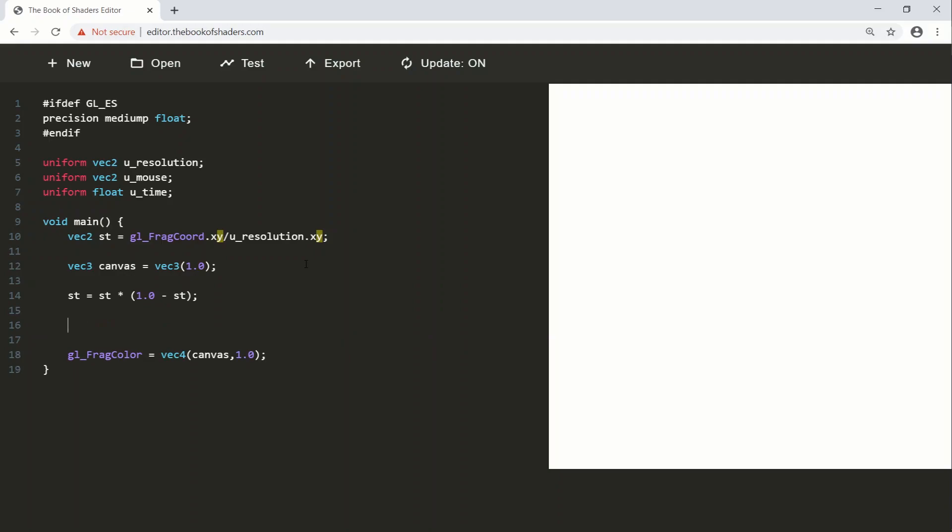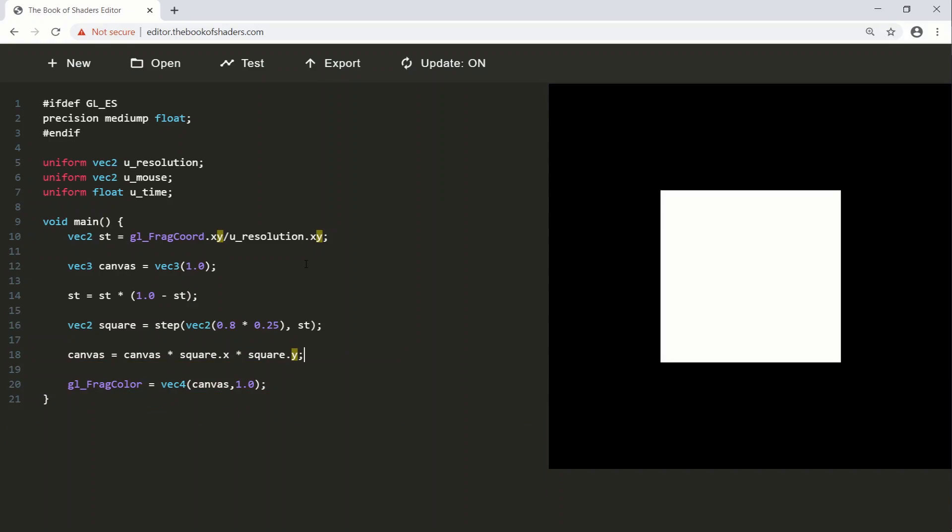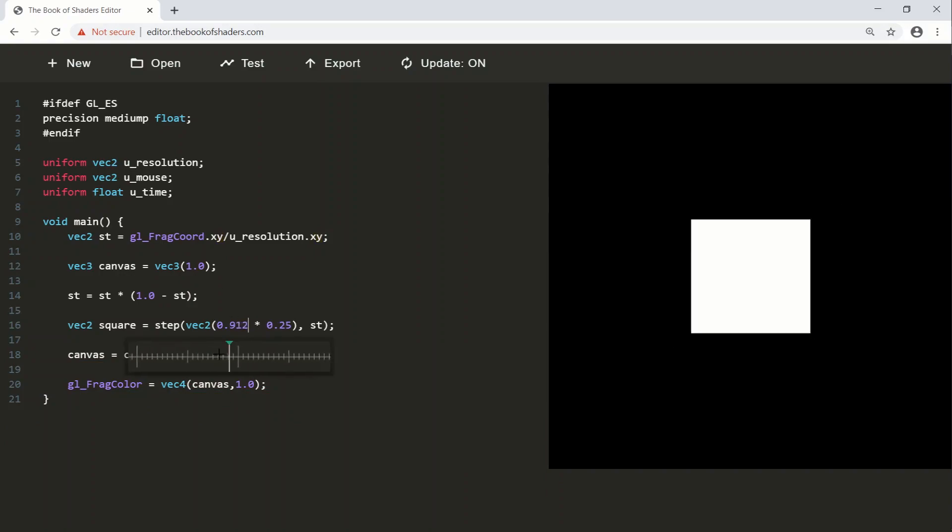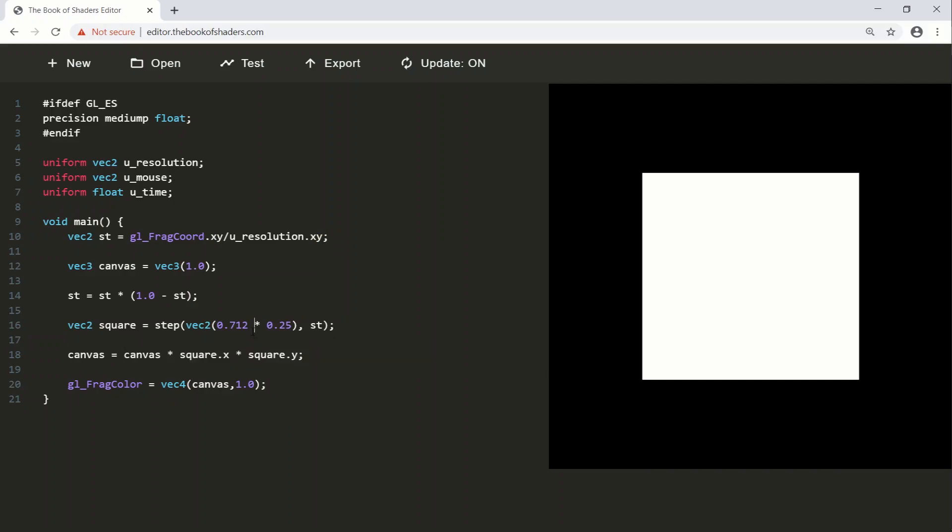I'll apply a step function there. So we're going to say VEC2 of the square is equal to step, and we'll say VEC2, and we'll do 0.8 times 0.25. I'll tell you why 0.25 in two seconds. So 0.25, and we feed in the st, and let's load that into the canvas. So canvas is equal to the canvas times our square.x and our square.y. There we go. All right. So we can just modify this 0.8, and we can get the box to modify like that.